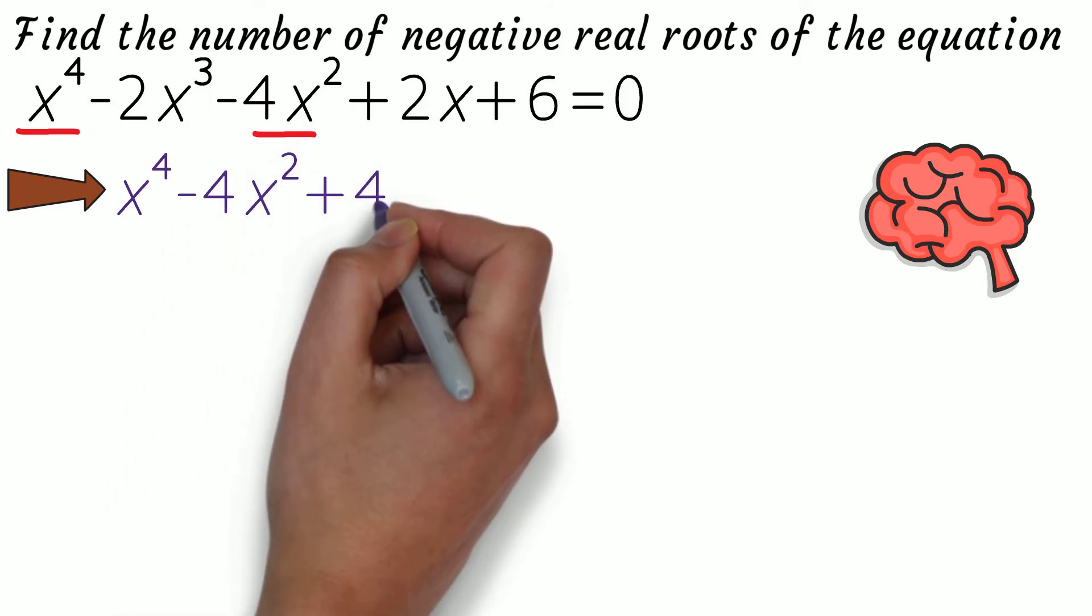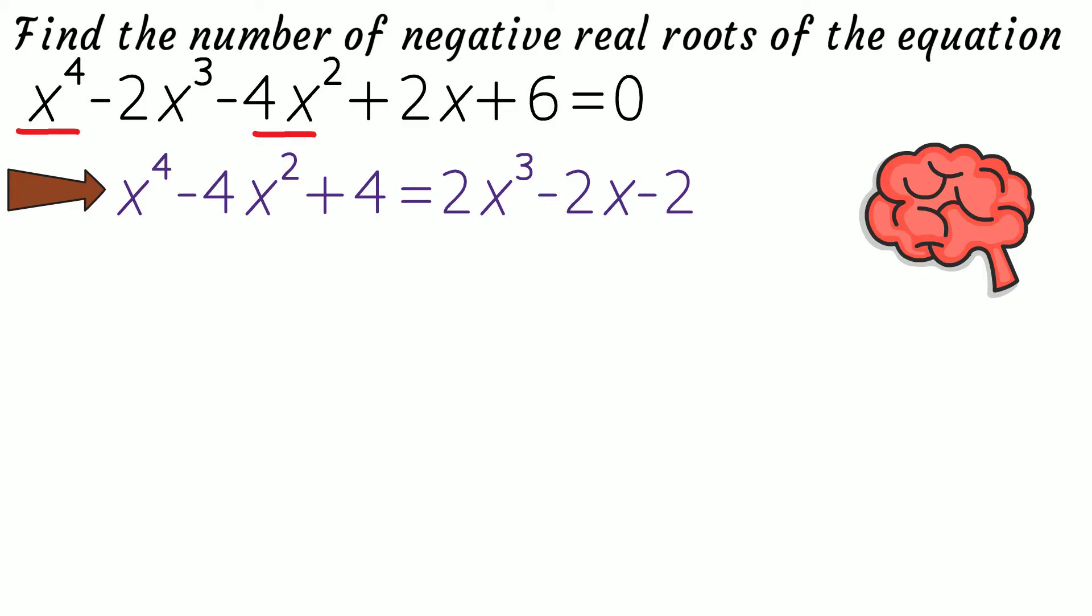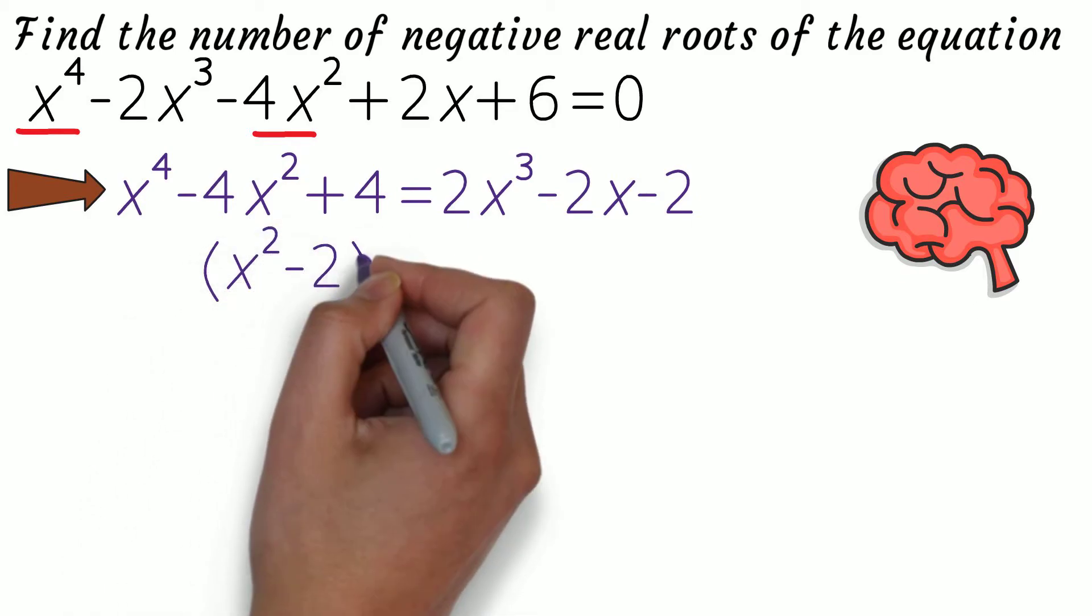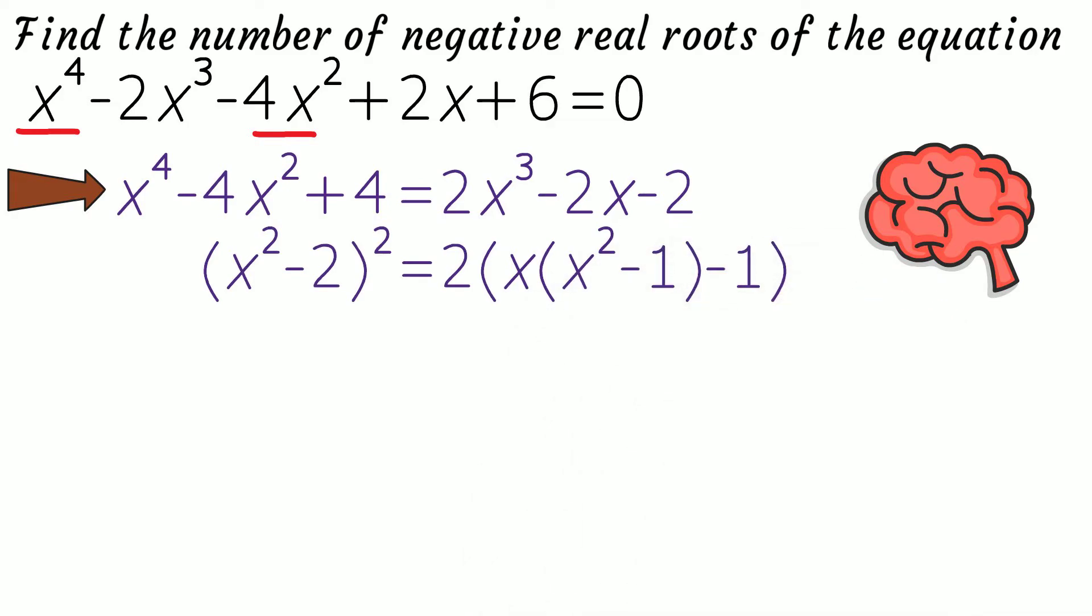So, doing that and moving the rest of the terms to the right-hand side, we get (x² - 2)² = 2(x(x² - 1) - 1).